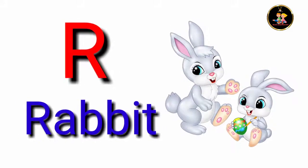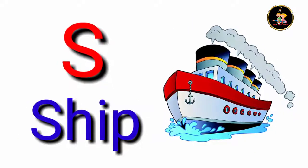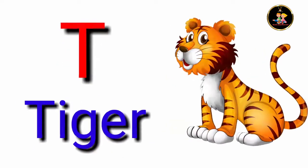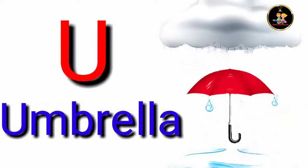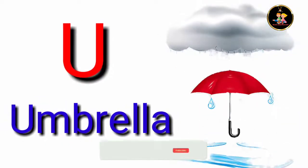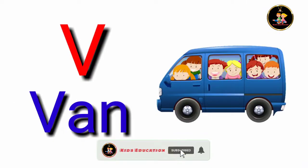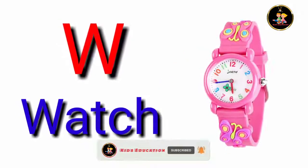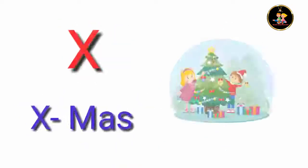R for rabbit, S for sheep, T for tiger, U for umbrella, V for van, W for watch.